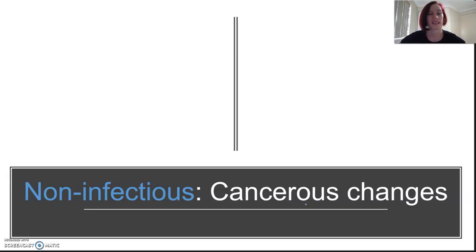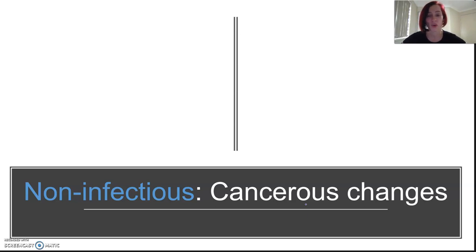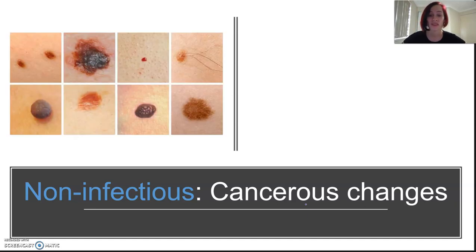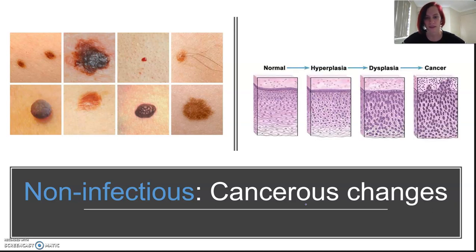Cancerous changes are basically tumors and other kinds of cancers that form when cells multiply in an uncontrolled manner. Many tumors have complex or unknown causes, but some we know — UV exposure can lead to skin cancers and smoking can lead to lung cancer. Treatments can include surgery to remove the tumor, chemotherapy, or radiation therapy. We'll pause here before moving on to infectious diseases.